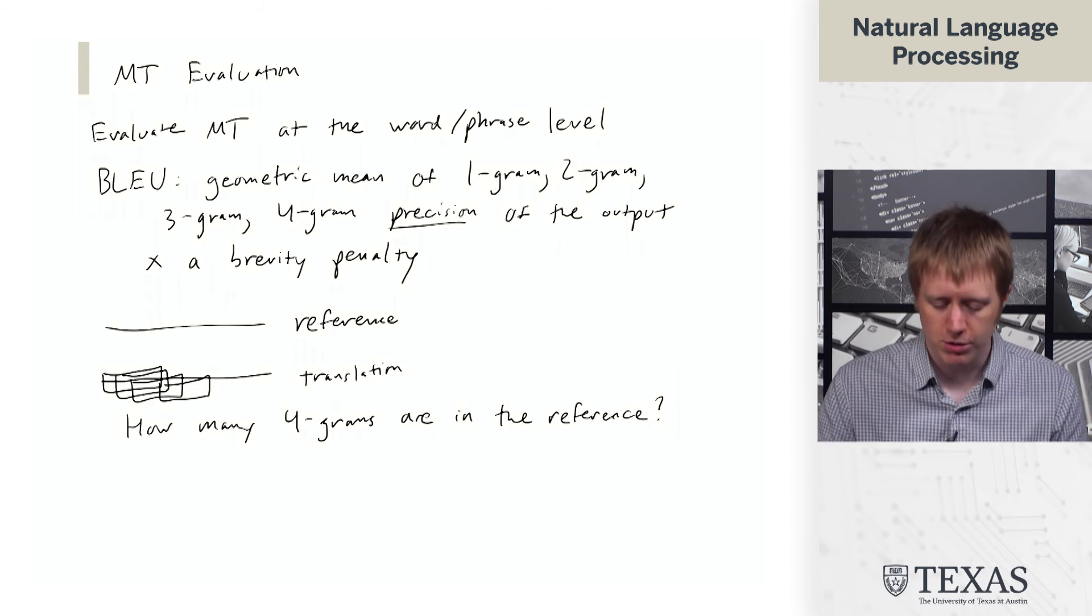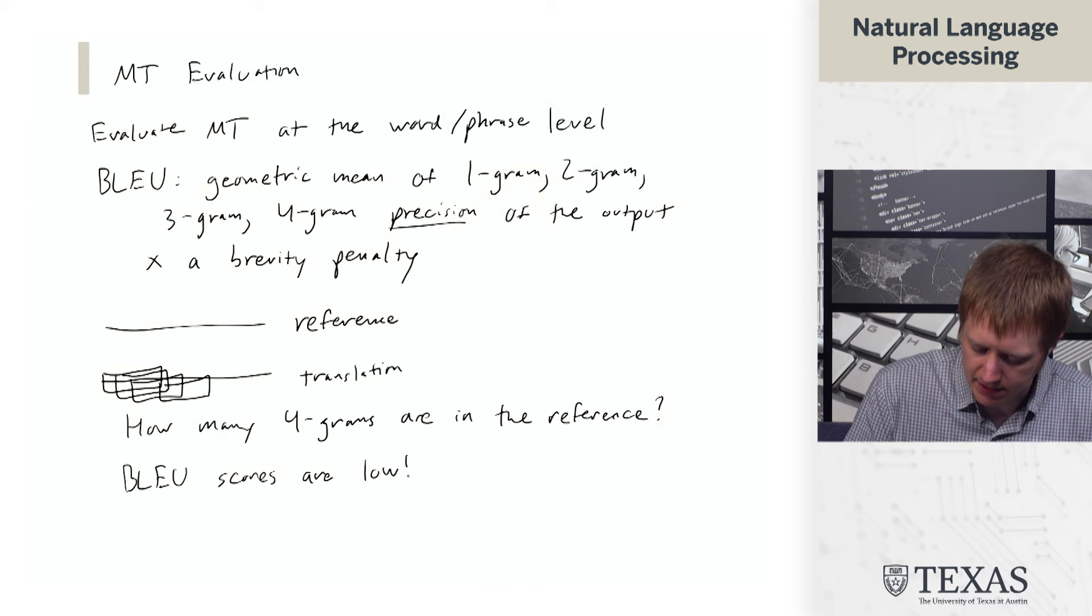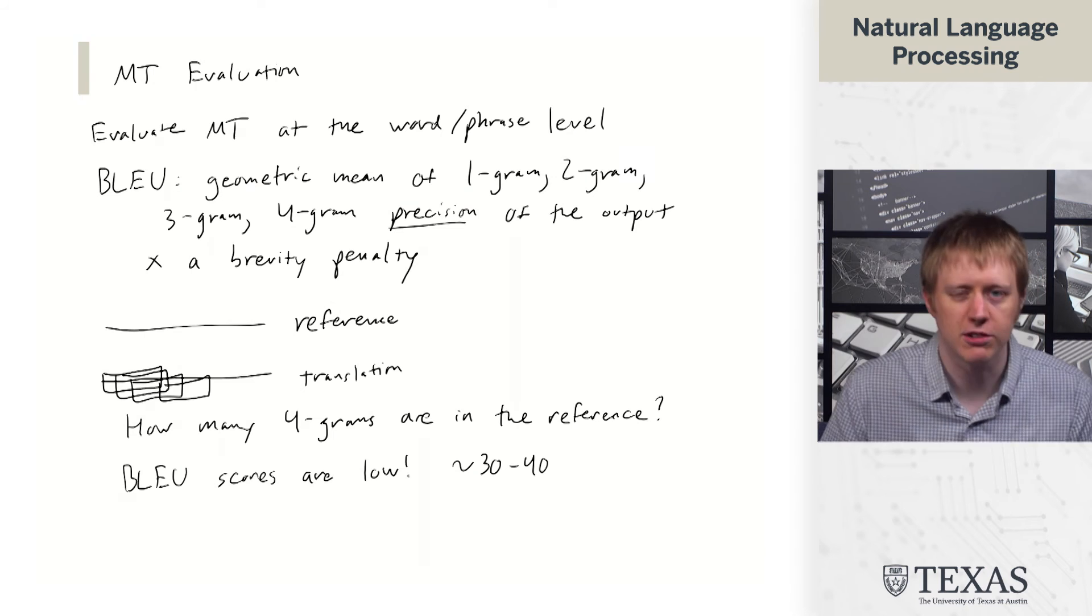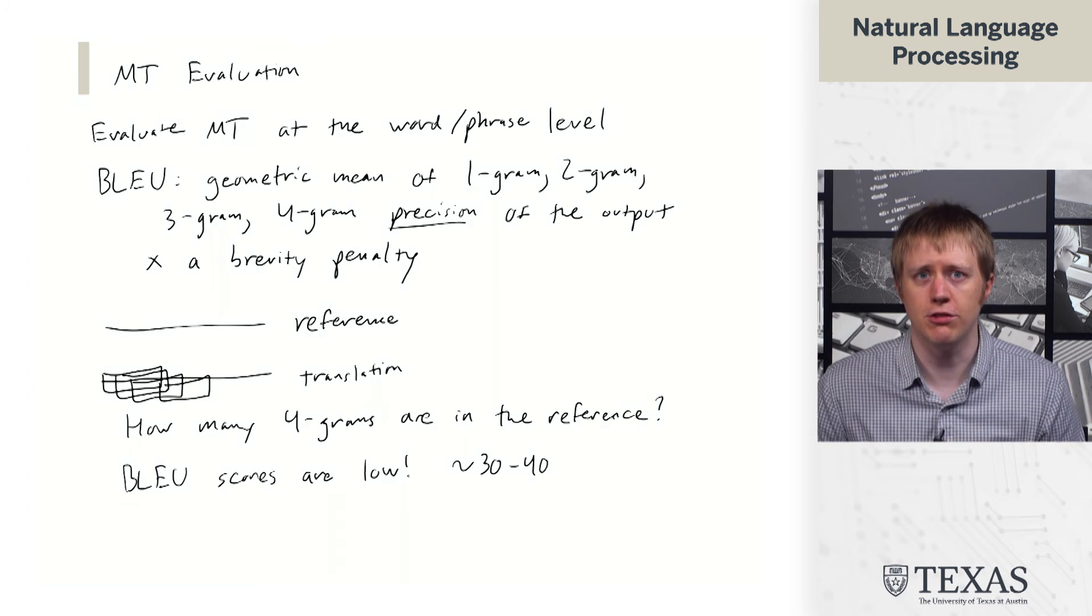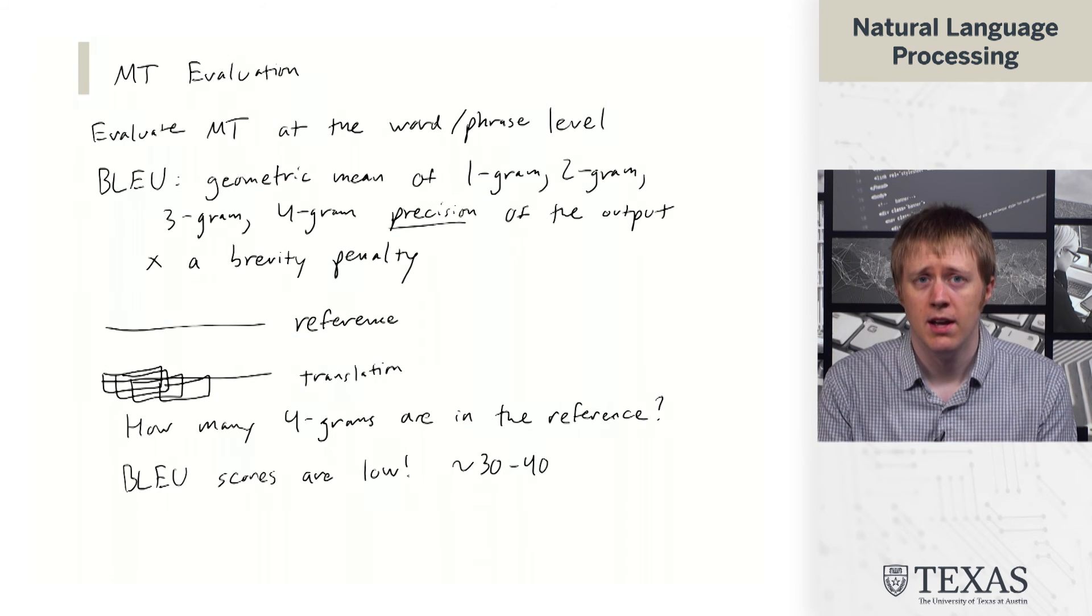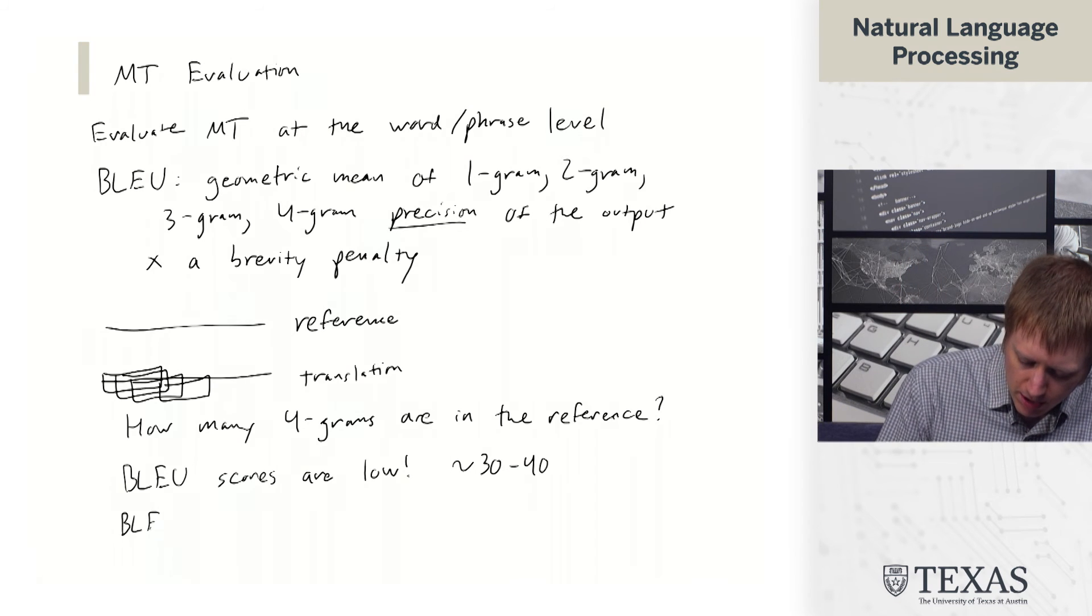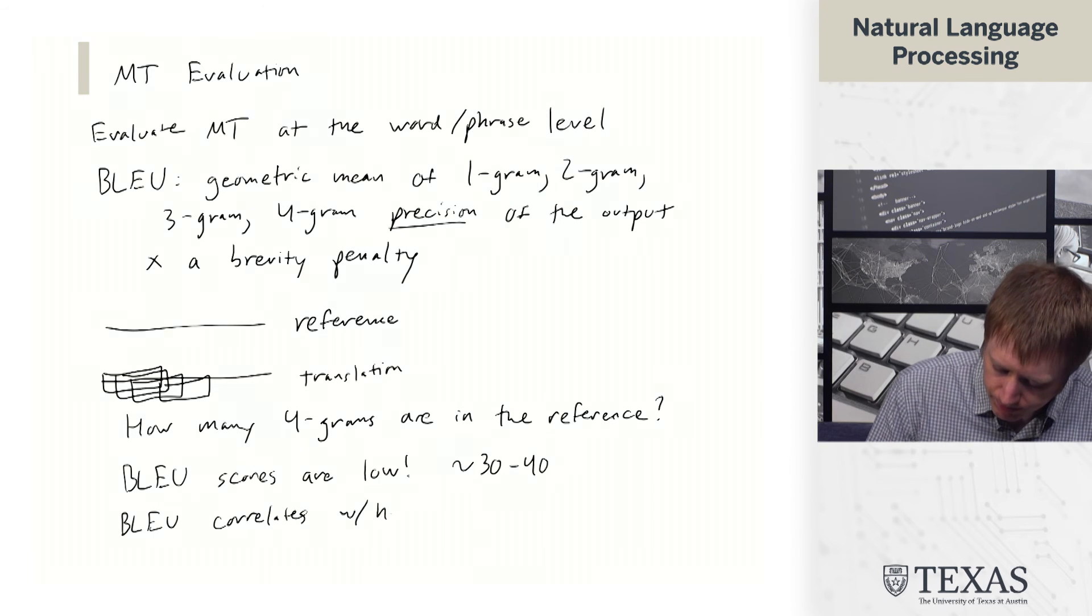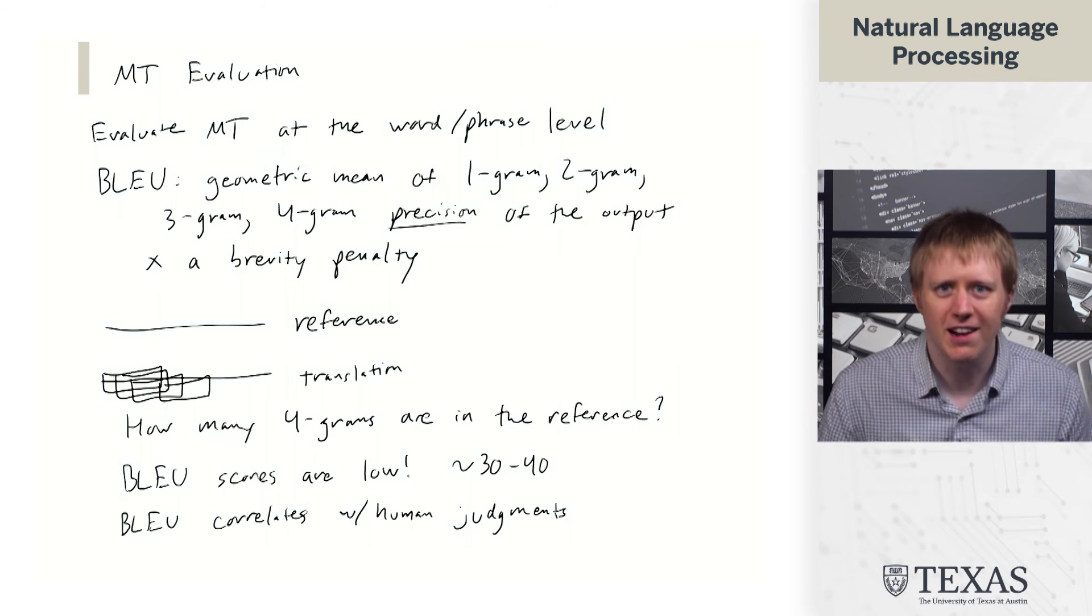But generally what happens is that BLEU scores are low. And when I say low, I mean that 30 to 40 might be an extremely good BLEU score. It might even be human-level translation quality just because there are true differences in how you're able to translate things. So what we know and have come to understand is that BLEU correlates pretty well with human judgments of translation quality, but it's not really an absolute scale.